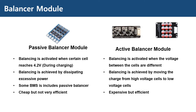The active balancer, on the other hand, is activated whenever the voltage between the cells are different. Balancing is achieved by moving the charge from high voltage cells to low voltage cells. It is more expensive than the passive balancers, but very efficient, since it does not dissipate power. And since it is also activated during discharge, the usage of the cells can be increased by a great amount.